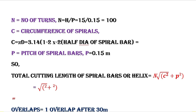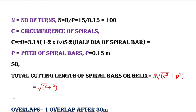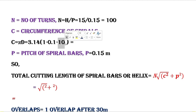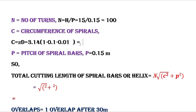The diameter of the stirrup is 10 millimeter = 0.01 meter. After putting all values into the circumference formula: π × (1 − 2×0.05 − 2×0.005) = 2.796 meter. The pitch P is already known as 0.15 meter.